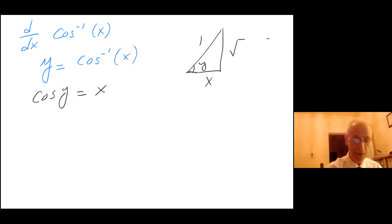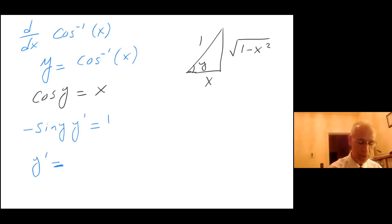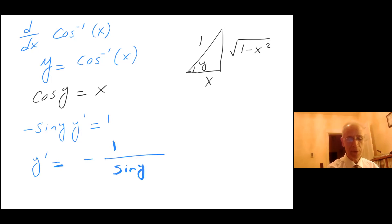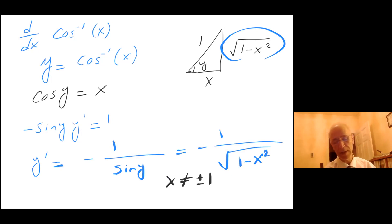This leaves the opposite side as square root of 1 minus x squared. Taking the derivative of the left hand side, I have minus sine of y times y prime equals 1, so y prime equals minus 1 over sine of y. Sine of y is side opposite over hypotenuse, which is 1, so this equals minus 1 over square root of 1 minus x squared.